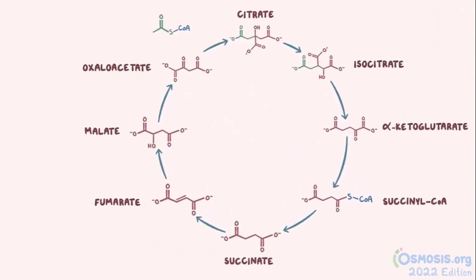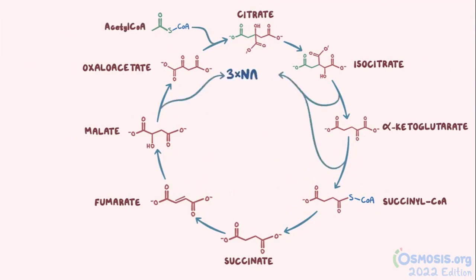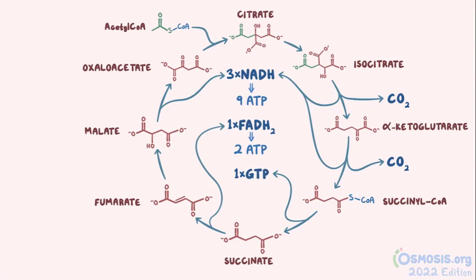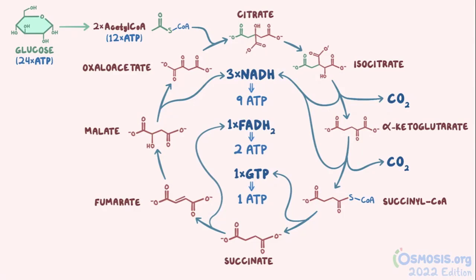As a quick recap: from one acetyl-CoA molecule, we've made three NADH, one FADH2, one GTP, and two carbon dioxides. The carbon dioxides leave the cell, are transported in the blood as bicarbonate thanks to carbonic anhydrases, and are then exhaled by the lungs. In the electron transport chain, each NADH makes three ATPs — totaling nine ATPs — and each FADH2 makes two ATPs, totaling two ATPs. Our one GTP yields the energy equivalent of one ATP, giving us a total of 12 ATP molecules per acetyl-CoA. Since one glucose molecule splits into two pyruvates, each glucose molecule yields 24 ATP in the citric acid cycle.